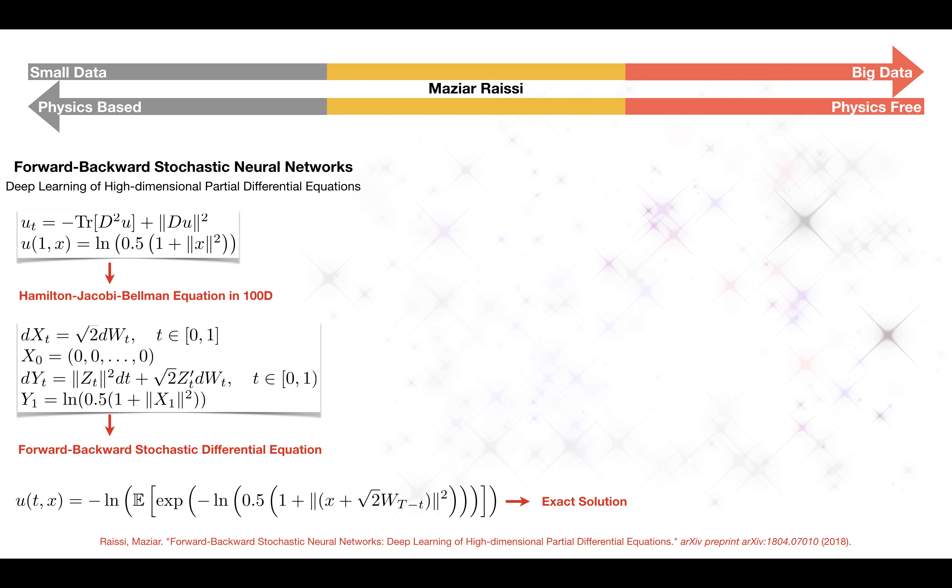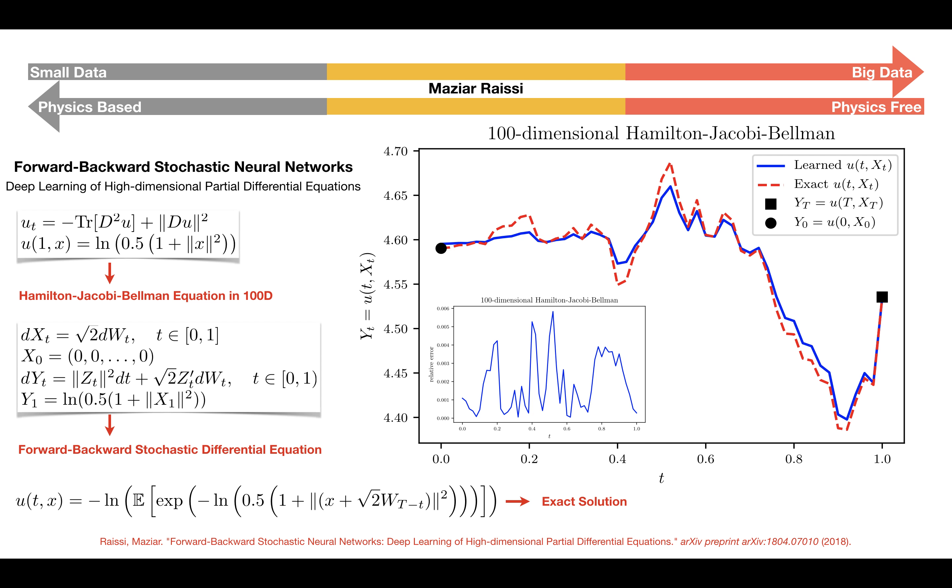In the following figure, we are evaluating the learned solution function at a representative realization of the underlying 100-dimensional state process x. As demonstrated in this figure, the relative error between model prediction and the exact solution is of the order of 10 to the power negative 3.